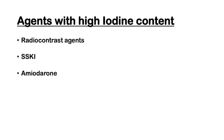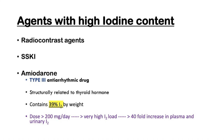Agents with very high iodine content include radio contrast agents, saturated solution of potassium iodide (SSKI), and amiodarone. Some interesting facts about amiodarone: it is a type 3 anti-arrhythmic drug; structurally it is very similar to thyroid hormone; and it contains 39% iodine by weight — almost nearly 40%. When the dose exceeds 200 mg per day, it provides a very high iodine load to the body, resulting in a 40-fold increase in plasma and urinary iodine — a very significant number.